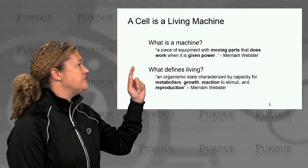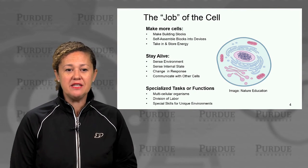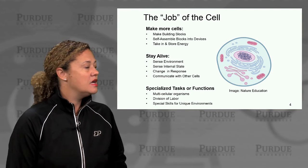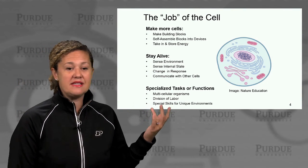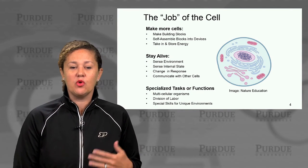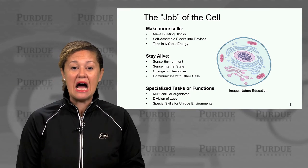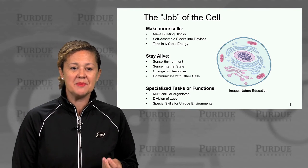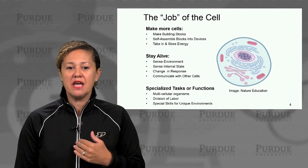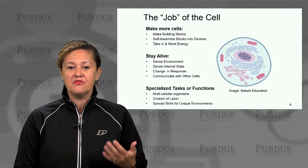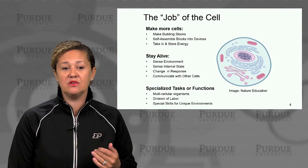Our goal in this lecture is to start to view cells as a living machine. At the most fundamental level, for most cells, it's to make more cells — to make the building blocks of another cell, all those biomacromolecules that need to self-assemble into organelles that form the cell. It needs to take in, store, and use energy. It needs to stay alive, and in order to do so, it needs to adapt to its environment, sense its internal state, change in response, and communicate with other cells to overcome challenges from the environment — stressors, nutrients, or starvation.